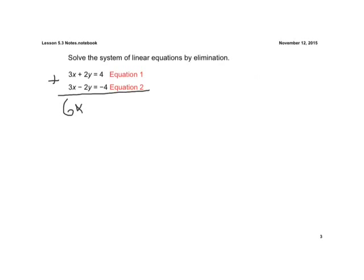Again, positive 2y and negative 2y, those just cancel each other out, equals 4 plus negative 4 is 0. Then if we divide by 6, we know that x is going to be 0. 0 divided by 6 is 0.